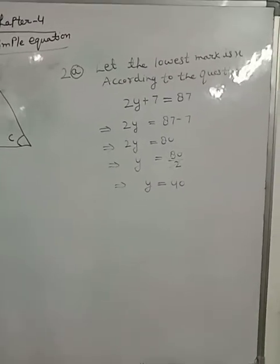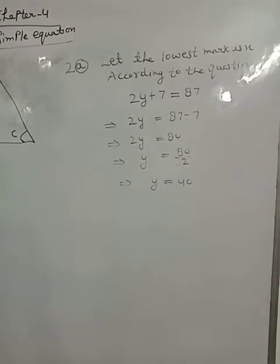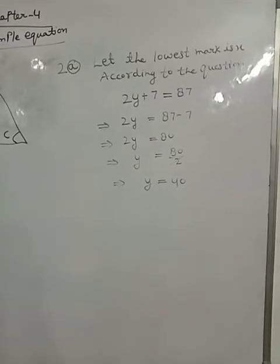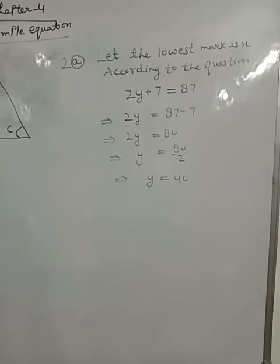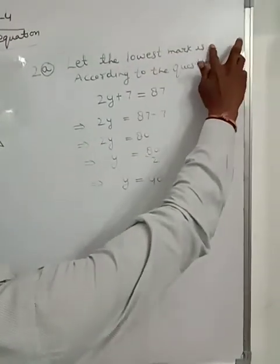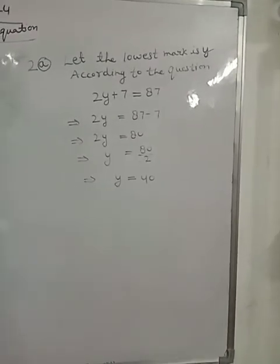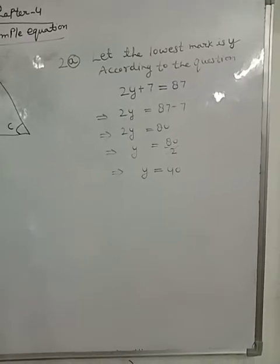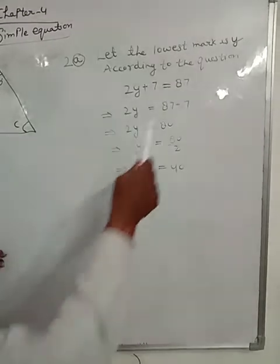Second question: the teacher tells the class that the highest mark obtained by a student in her class is twice the lowest mark plus 7. The highest score is 87. What is the lowest score?